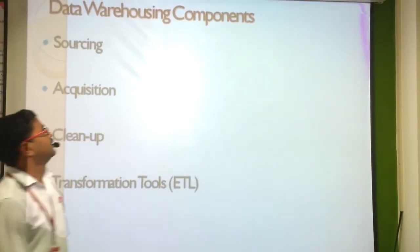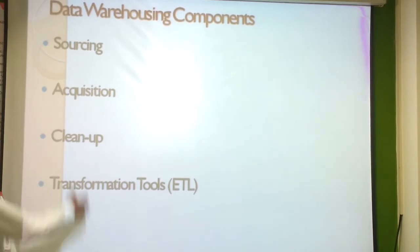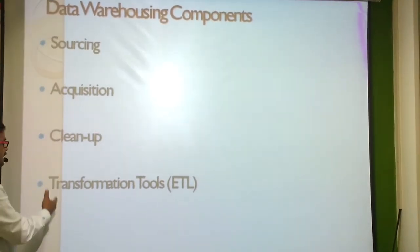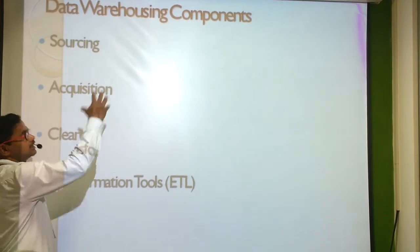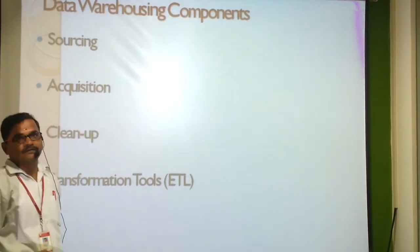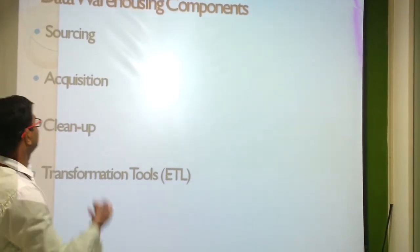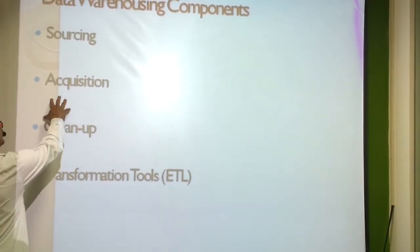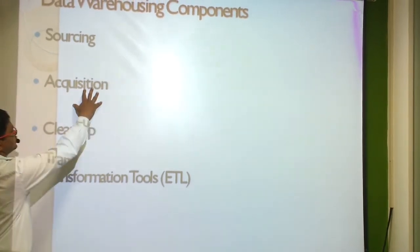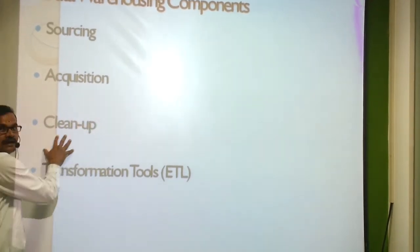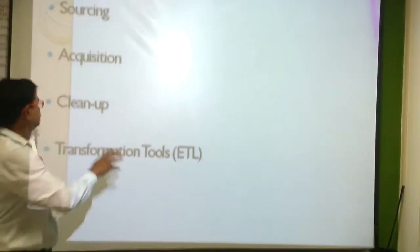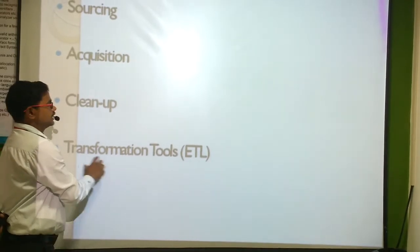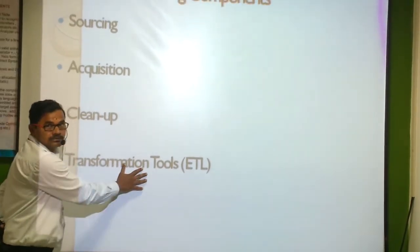What are the components of data warehousing? They are sourcing, acquisition, cleanup, and transformation tools. Sourcing means collecting data from different areas. After that, the data is integrated. After integration, the data is cleaned — each piece of data is checked. After that, transformation tools are used — those are the ETL tools.